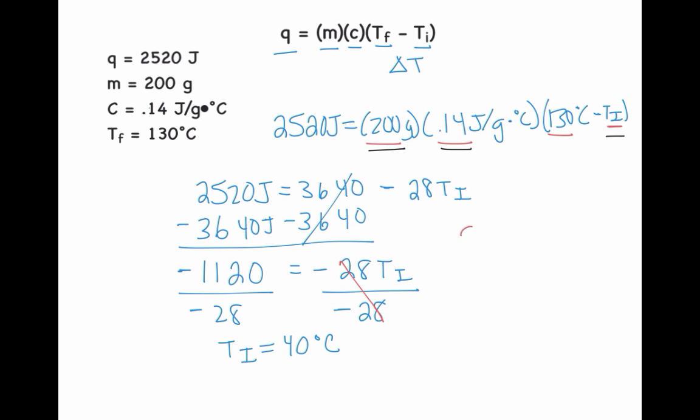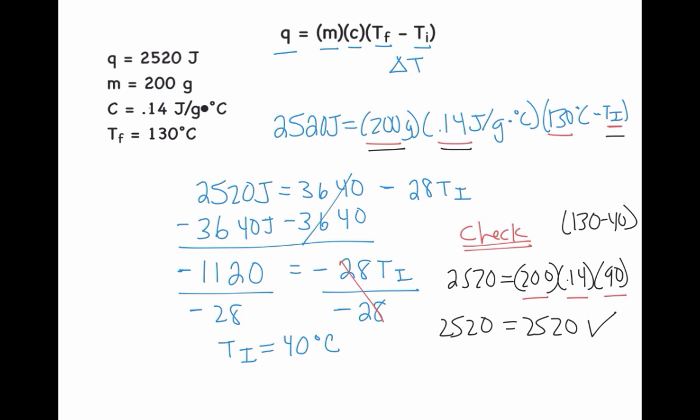Now the thing that I can do next is just do a quick check to make sure that I have this done correctly, which is so incredibly important. So I'm going to do 2,520 equals 200 times 0.14, and then take the difference between 130 minus 40. And 130 minus 40 gives me 90. And when I multiply together 200, 0.14, and 90, I find that my 2,520 here equals my 2,520 here. That checks. And I know that my final answer of temperature initial of 40 degrees is correct. And that is how you find initial temperature using Q equals MC delta T.